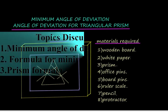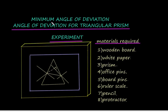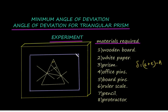Before we proceed, let us try to understand the experiment conducted to determine the angle of deviation for a triangular prism. We have already derived an expression for angle of deviation. We have seen that angle of deviation delta is equal to i plus e minus a. The materials required are a wooden board, white paper, prism, office pins for doing the experiment, and board pins for fixing the paper.